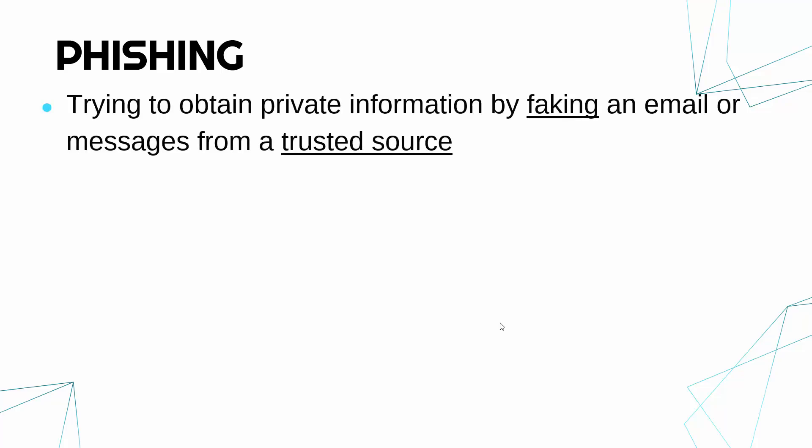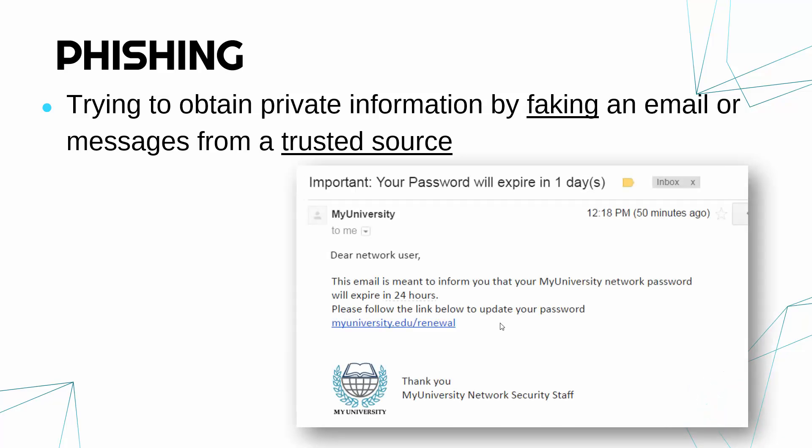Phishing is a separate threat, but you could argue it's a type of social engineering. This is where you're trying to obtain private information by faking an email or messages to look like they're coming from a trusted source. You might get weird text messages or emails which are obviously fake, but they're looking for you to click a link and put in your details or download something dodgy.